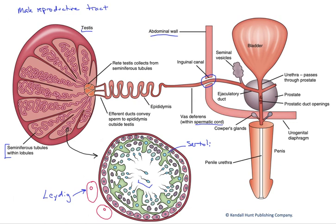If we take one of those seminiferous tubules and cut it in cross-section, we can see its structure here. We've got the sperm on the inside, bracketed — the mature gamete cell.